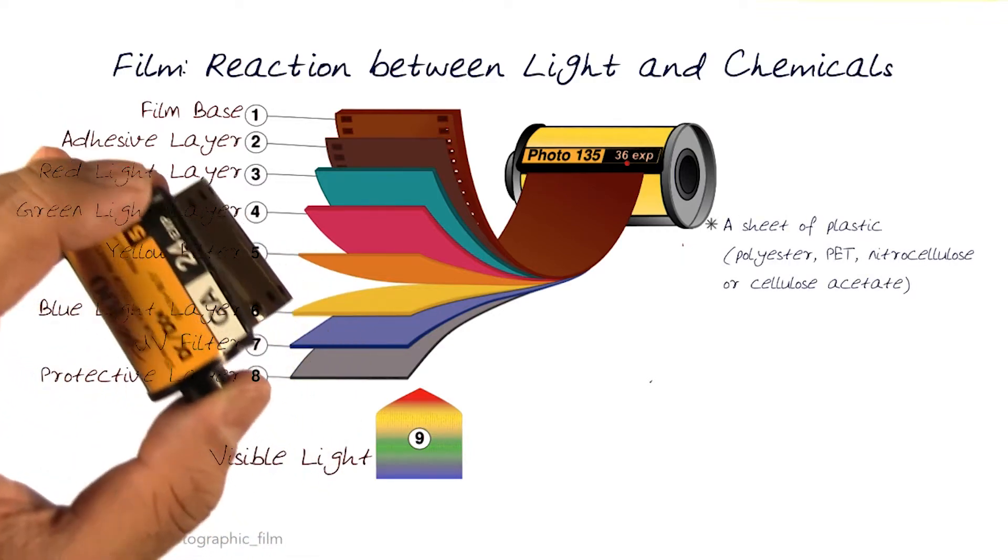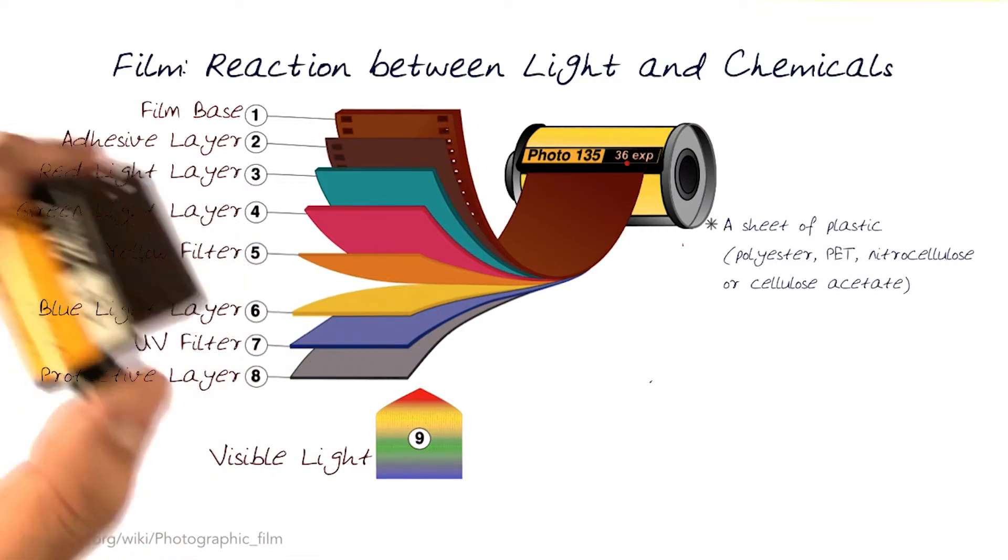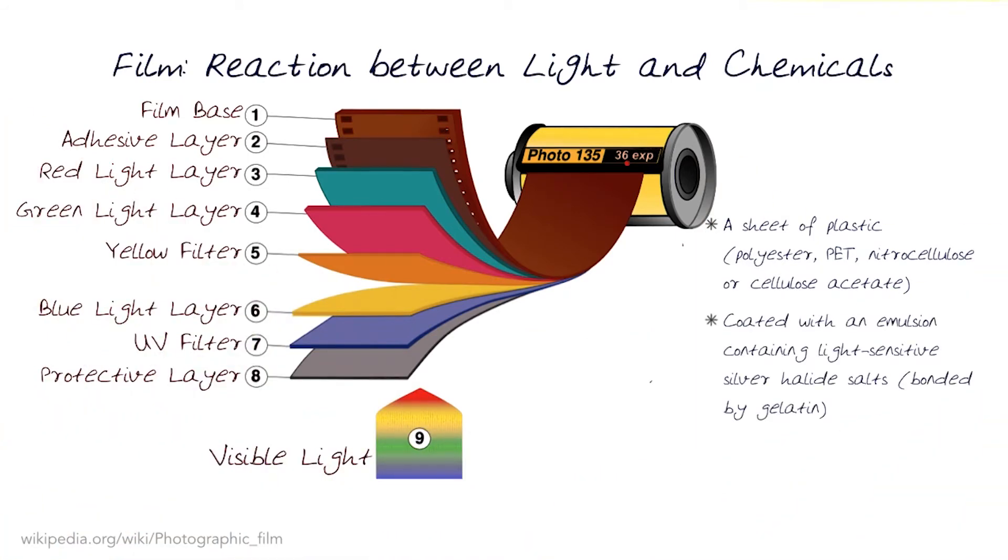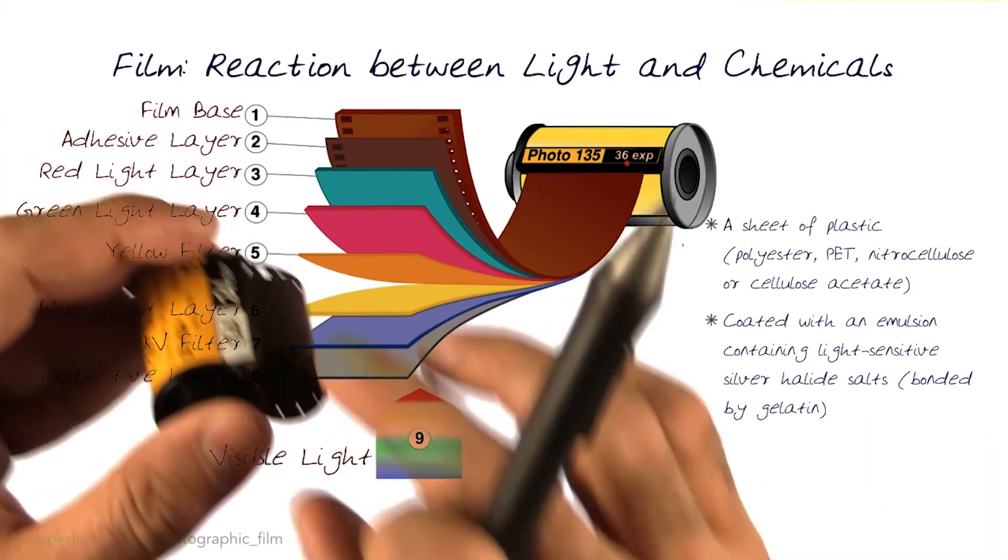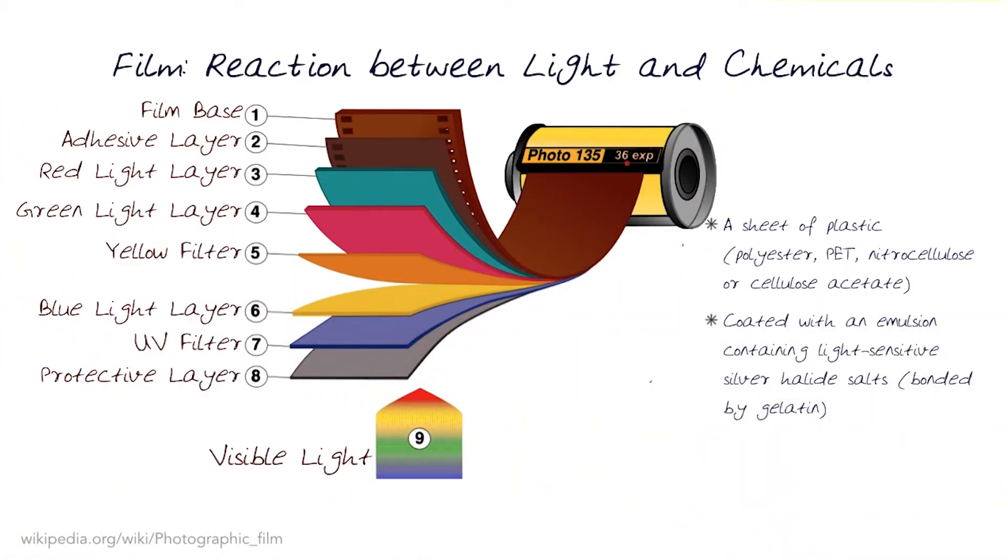A film is a sheet of plastic, and that's what I've shown you so far. It's coated with an emulsion that is full of light sensitive silver halide salts, which have been bonded by a gelatin. There are silver halide salts inside the layers. These are the light sensitive ones that actually store the light changes.